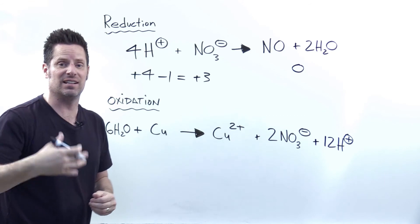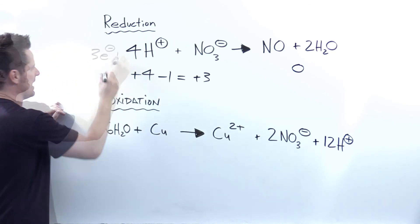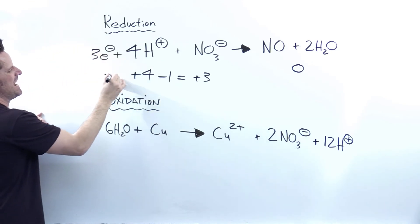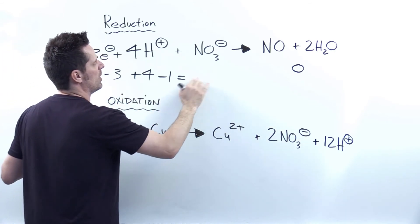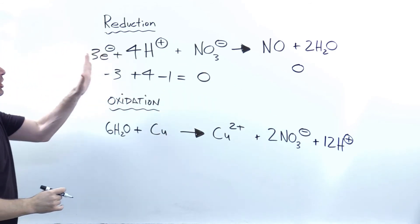In order to balance that, I have to add electrons, and I'm going to have to do it on the left side. Adding three electrons then will give me a negative three thrown here in the addition mix. That will then give me an overall zero charge on the left. I now have charges balanced.